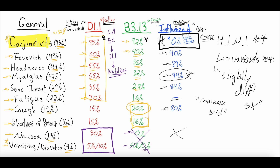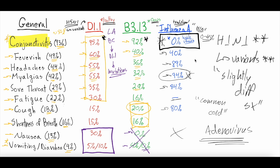One important caveat: having conjunctivitis does not mean it's bird flu. Tons of upper respiratory viruses — adenovirus being a big one — can cause conjunctivitis. However, if you had conjunctivitis, tested positive for influenza A, and that influenza A was not subtyped as one of the traditional influenza A viruses, that might be something to think about. But conjunctivitis alone is certainly not diagnostic of bird flu.